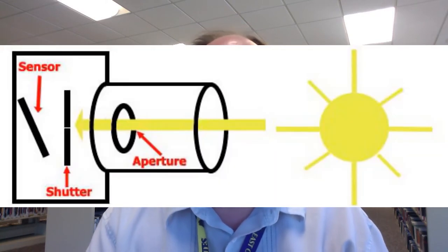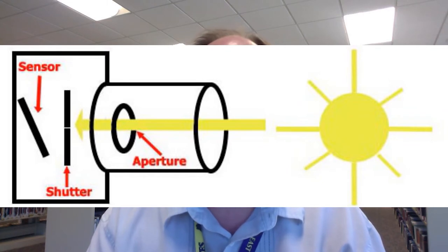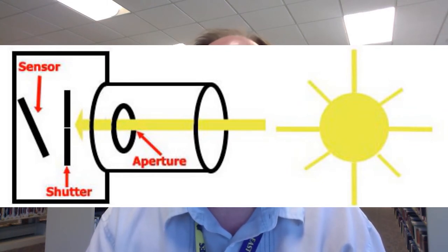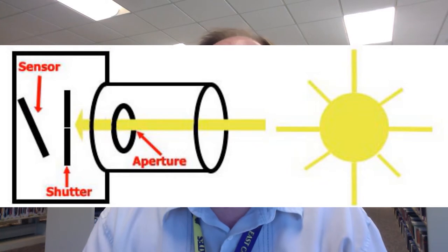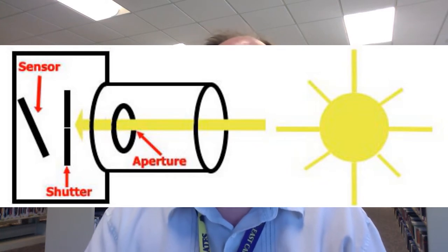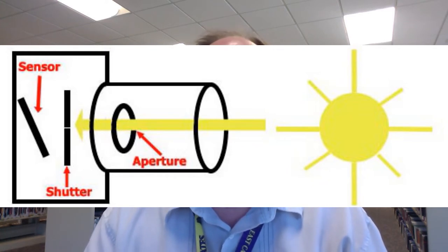So what is shutter speed? First we need to know the basics of how a camera works. A camera focuses light onto film, or in the case of a digital camera, a digital sensor. This happens when you press the shutter release button, which opens the shutter for a duration of time and lets light in. The longer the time it is open, the more light that gets in and the brighter your image will be.